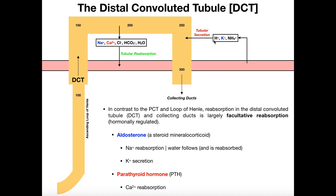There is also some secretion that happens in the DCT. If we have excess acid in the blood, hydrogen ions can be secreted and will go into the urine. We already mentioned potassium - if there's excess of that, aldosterone will trigger more secretion of potassium from the blood into the tubules. And then also excess ammonia, which is toxic - such as in the case of amino acid breakdown - can have secretion into the tubule system.